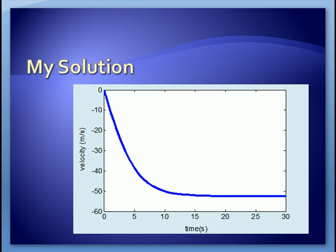So this shows the velocity as a function of time. It's negative because it's moving down. The velocity starts at zero, accelerates to a little over 50 meters per second in the negative direction, and reaches steady state because at that point the drag force is high enough to match the gravitational force, and there's no further acceleration.